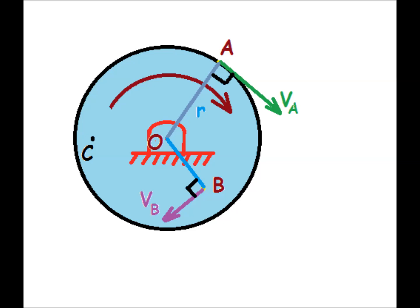Now consider point C on the disk. Velocity at point C will be perpendicular to OC in the direction shown in the figure, as the disk is rotating in clockwise sense. And for velocity at point C, we can write the relation VC equals OC into omega.